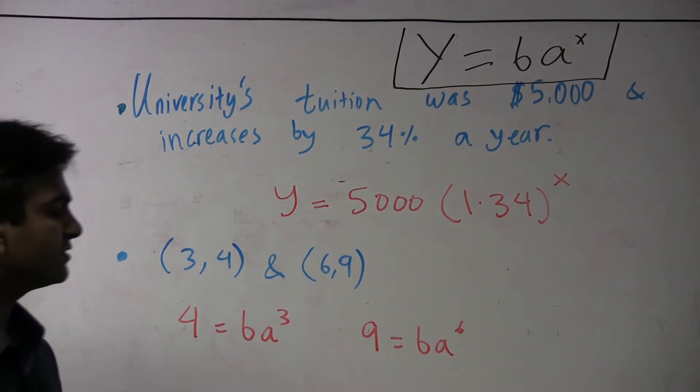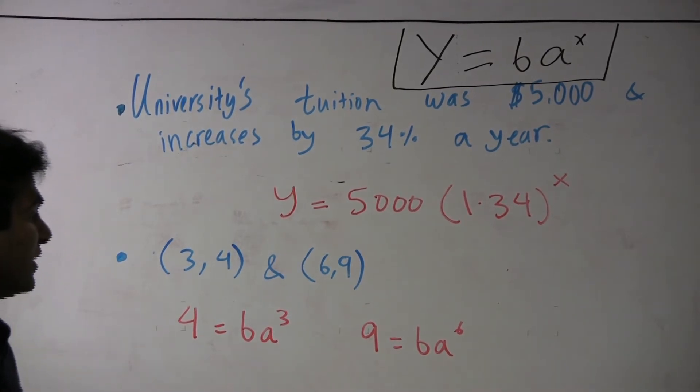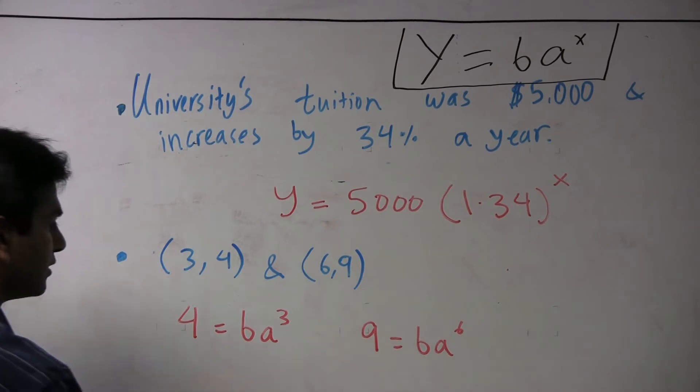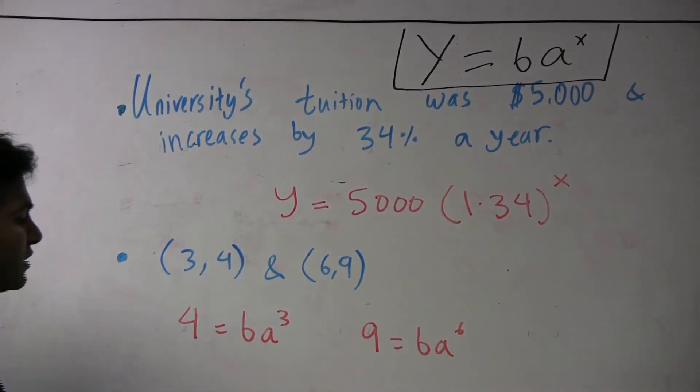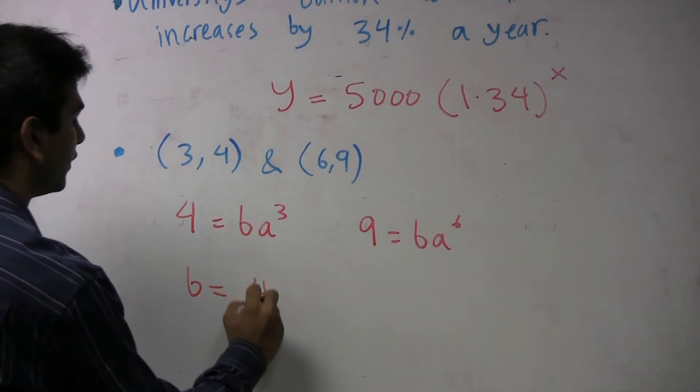Now we have two equations and two variables that we want to solve for, b and a, and so we can use them to do that. Really quickly now, the way we would solve this is we would solve for b initially. So here, b is 4 over a cubed.